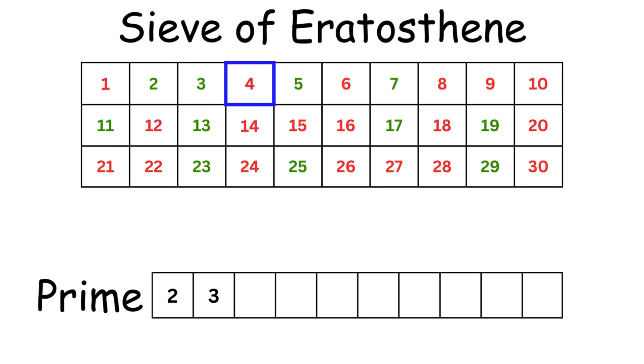The algorithm then moves on to the next number. Since 4 is already false, it skips over it and moves on to 5. Again, 5 is added to the primelist and all of its multiples are set to false.